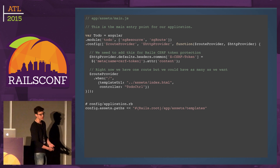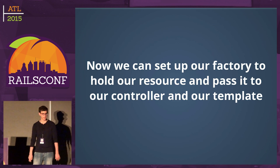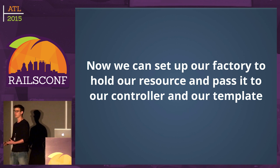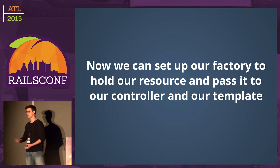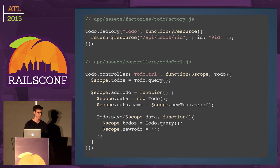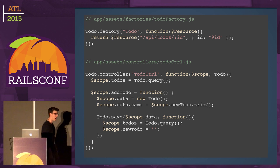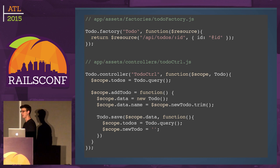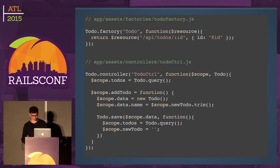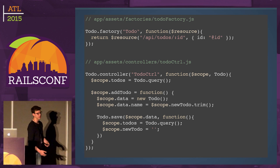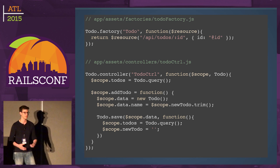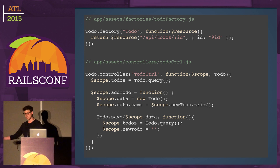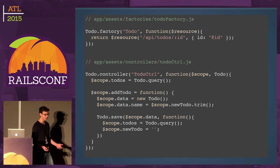We set up a factory to hold our resource, then inject that factory into the controller, which binds it to the template. Everything lives under /api/todos — that's the endpoint every call hits. The controller uses two-way data binding under the hood: on instantiation, scope.todos makes a GET request to /api/todos. There's one function, addTodo, which saves the model (making a POST), re-queries, and clears the model.